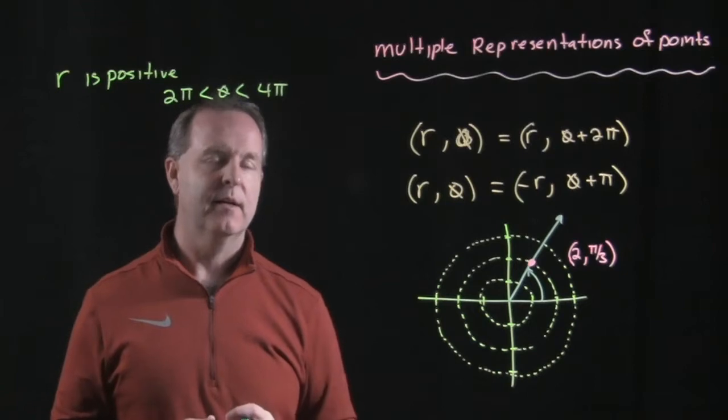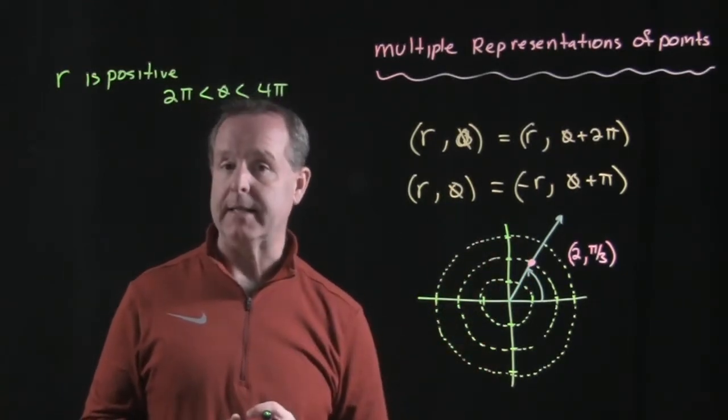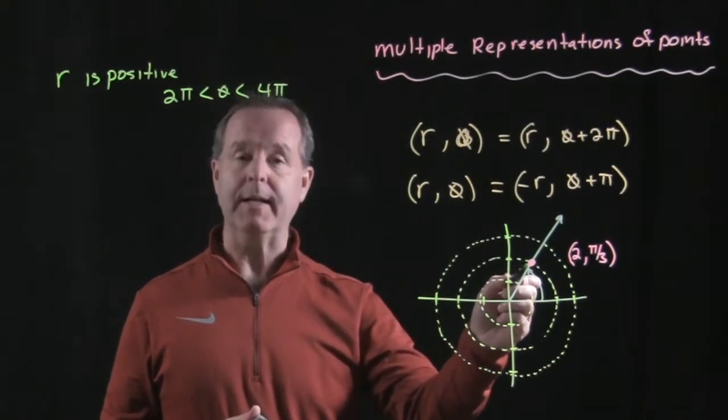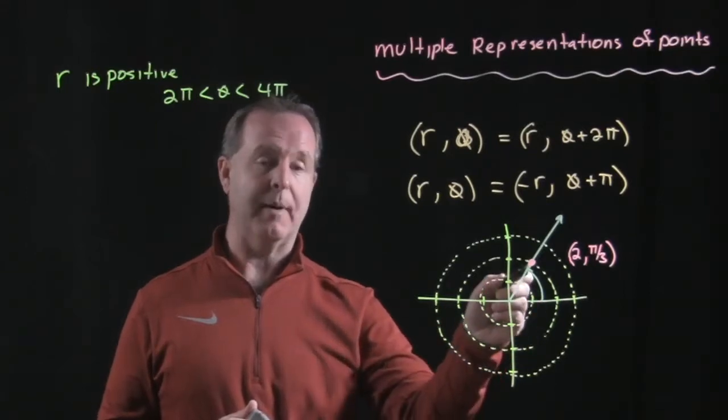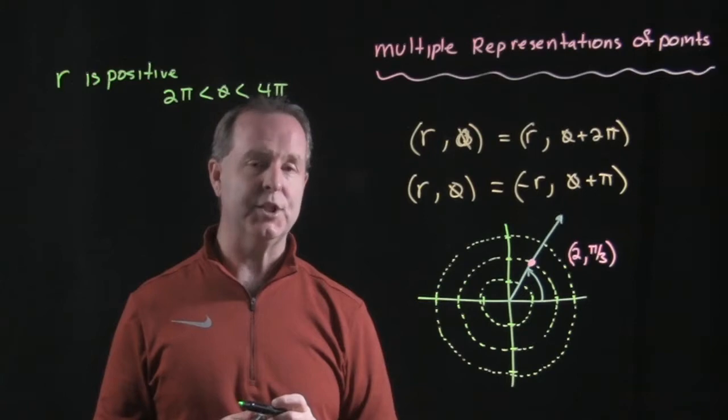With polar coordinates, we can represent our points in multiple ways. Imagine I have some point (2, π/3). The angle is swept over π/3, I'm two units out. That's my polar coordinate position.